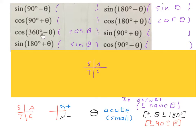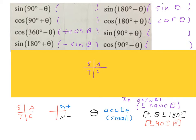For the next set with no 90 in the expression, the name does not change. For cos(360 minus theta): start at north, 360 minus theta — fourth quadrant — C is positive there, so positive cos(theta). For sin(180 plus theta): go to 180 plus theta — third quadrant — T is shown, meaning sine is negative, so negative sin(theta). For sin(180 minus theta): 180 minus theta — second quadrant — S is positive, so positive sin(theta). For cos(180 plus theta): 180 plus theta — third quadrant — C is negative there, so negative cos(theta).